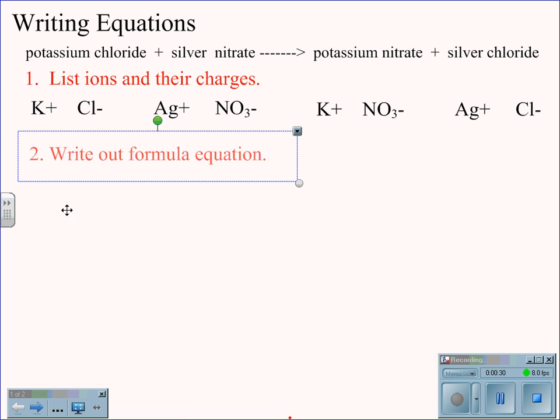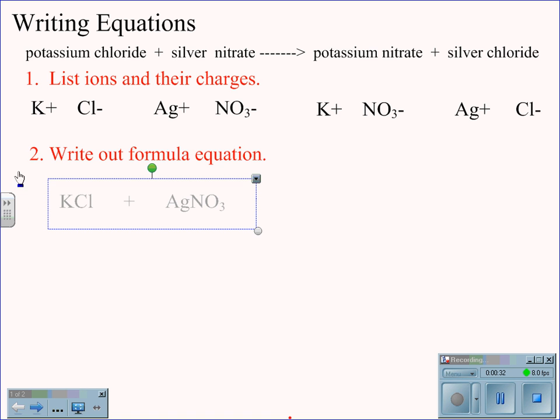We can now write out the formula equation. KCl goes together in a one-to-one ratio, plus one to minus one, and silver nitrate does the same, plus one silver with minus one nitrate, a one-to-one ratio, AgNO3.